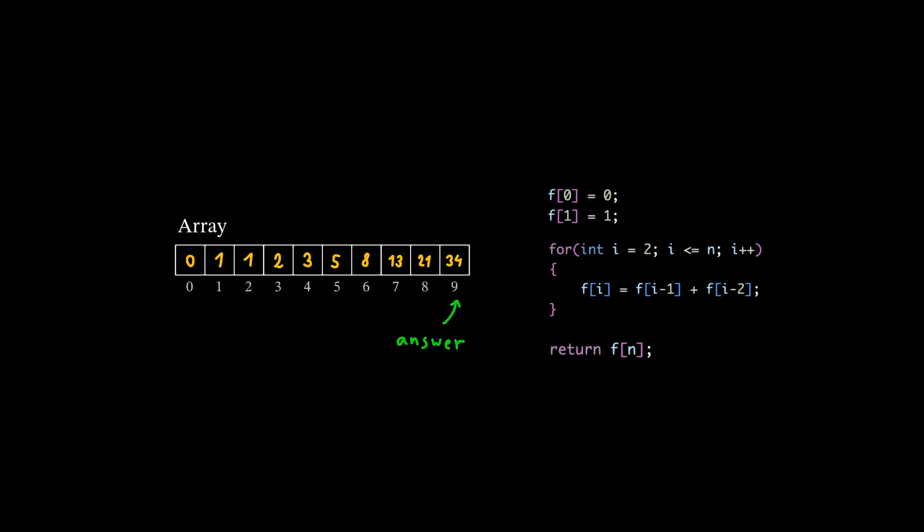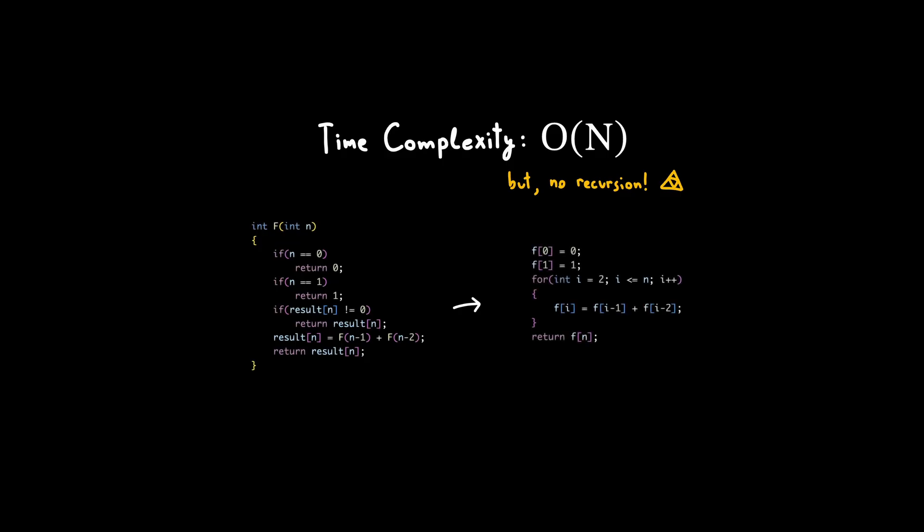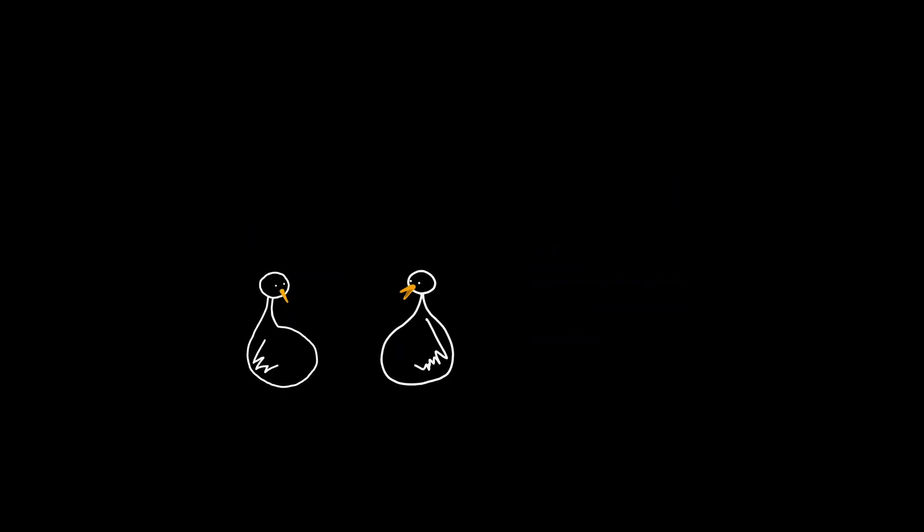This will give the exact same result, but without recursion. Time complexity stays the same, so we essentially do the same number of calculations. But we avoid doing expensive recursive calls and replace them with a simple for loop. This reduces not only execution time, but also code complexity. The only new challenge that comes with this approach is figuring out the order in which we need to calculate values. We need to make sure that when we calculate some value in a DP, we have already computed all the previous values. But usually it's not the difficult part.